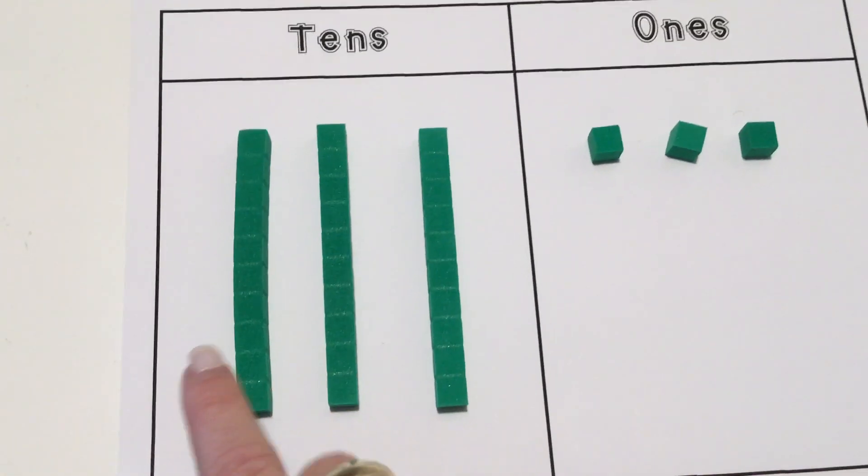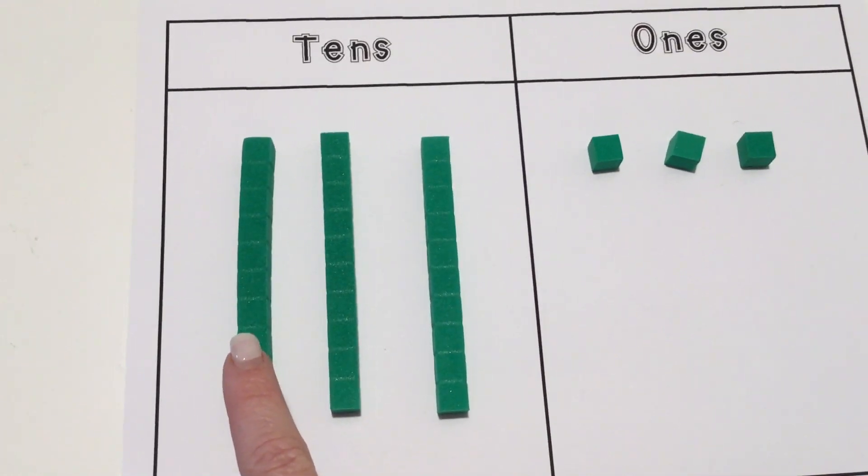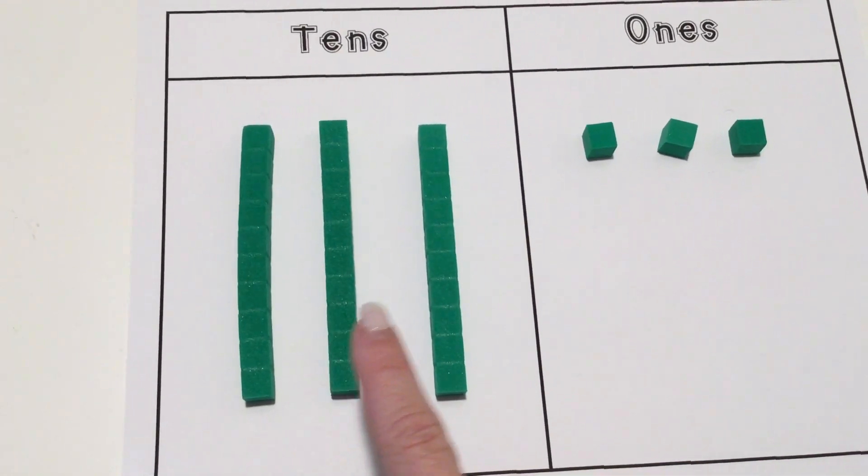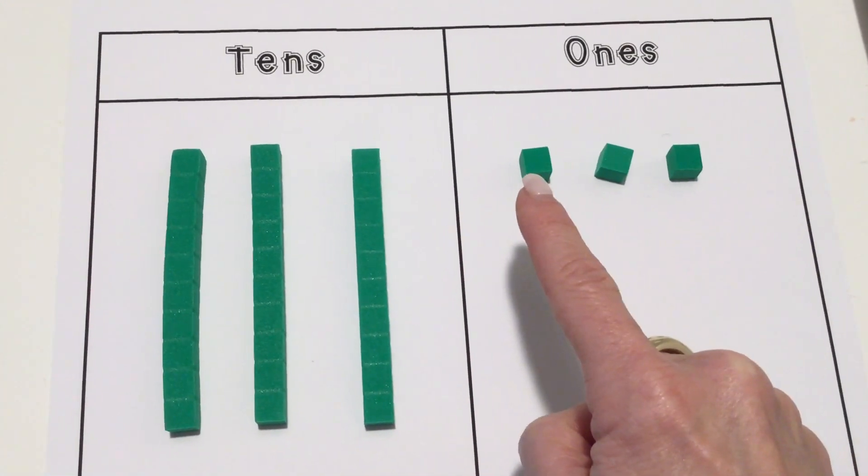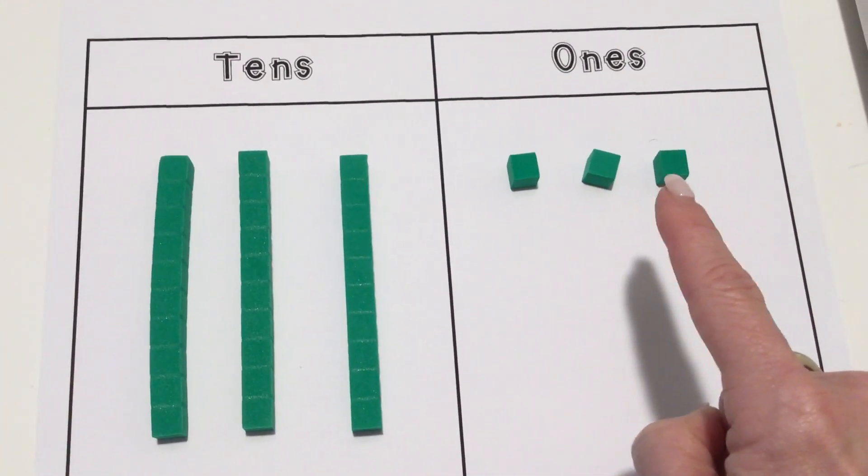A better way would be to count it by tens: 10, 20, 30, and then we begin counting by ones: 31, 32, 33.